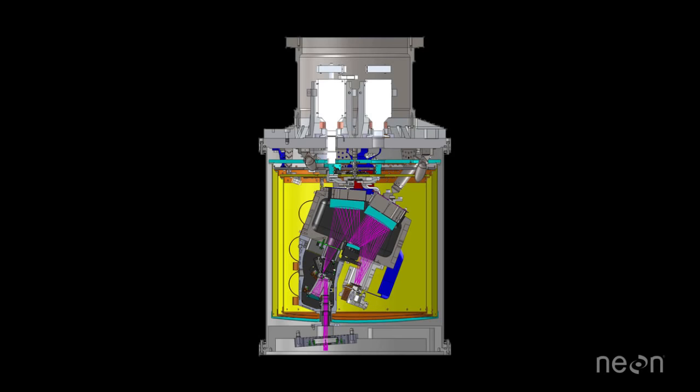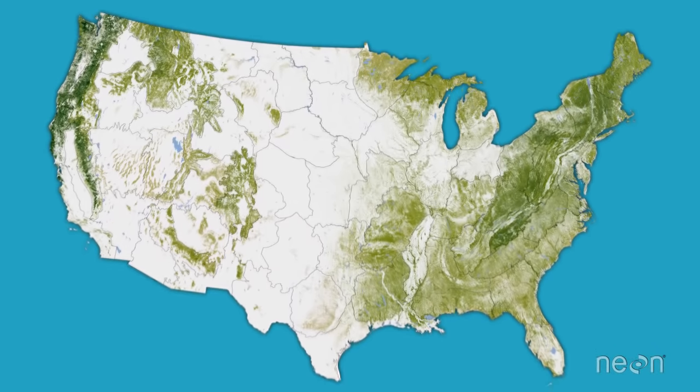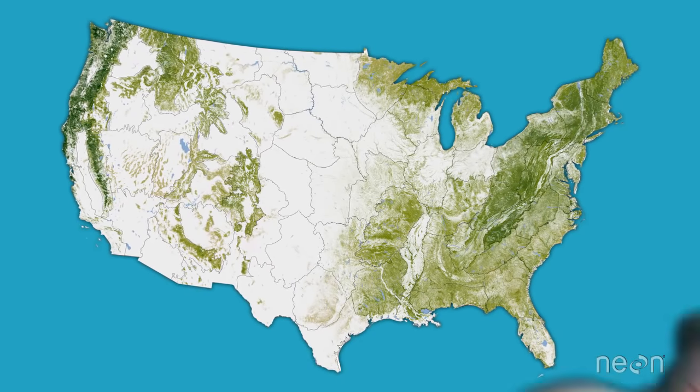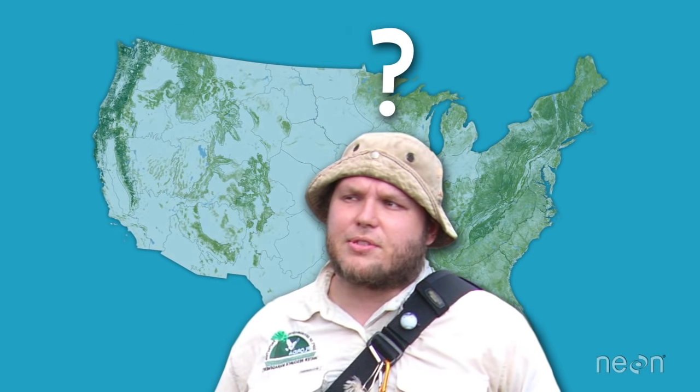Imaging spectrometers mounted on airplanes and satellites help us create maps, like this vegetation cover map for the entire United States. But how exactly do scientists measure changes to our environment using reflected light energy?